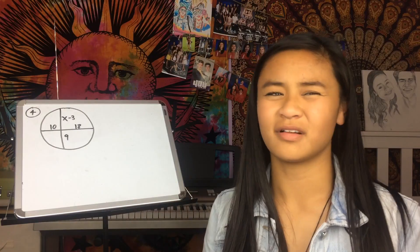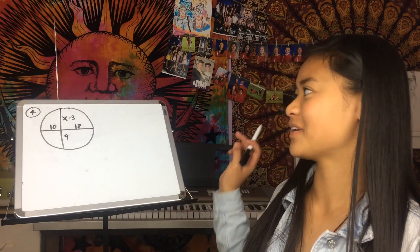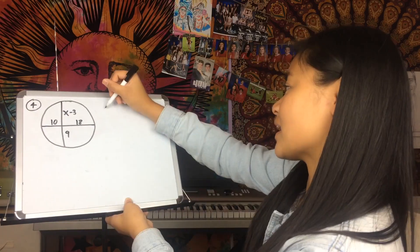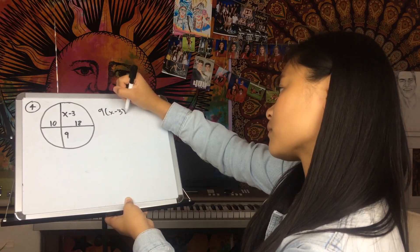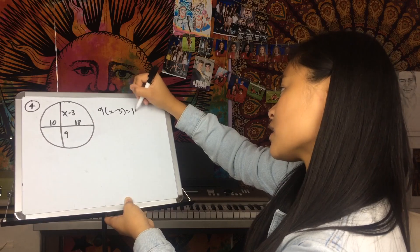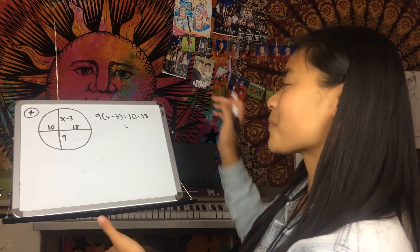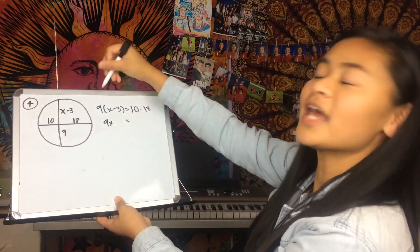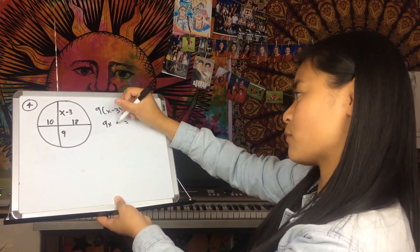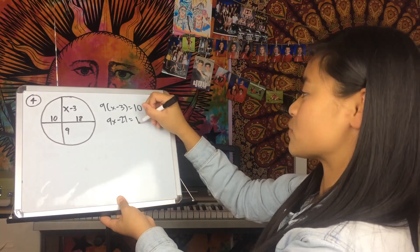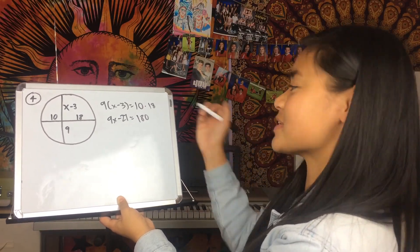We are going to use the Segments of Chords Theorem. We set up: 9 times (x minus 3) equals 10 times 18. What's the next step? We multiply: 9 times x gives 9x, and 9 times negative 3 gives minus 27. Then we simplify 10 times 18, which is 180. Next, we add 27 to both sides.